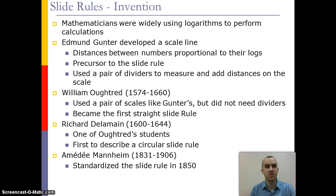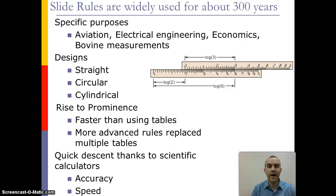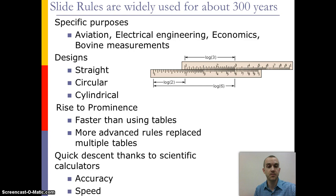The slide rule was widely used for about 300 years in pretty much all forms of mathematics with very specific purposes, especially in aviation, engineering, economics, and even bovine measurements. There were different types depending on what you were trying to do — the three major types were the straight, the circular, and the cylindrical. It rose to prominence because of how easy it was to use compared to a table. However, in the early 1970s the rise of the scientific calculator made the slide rule obsolete, and it has since become something you mostly see in a museum.